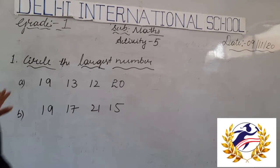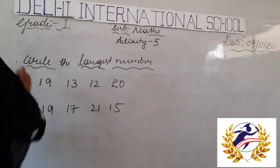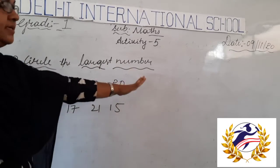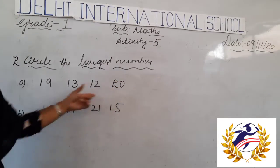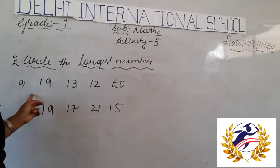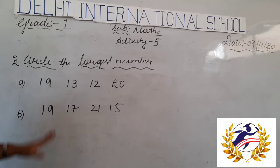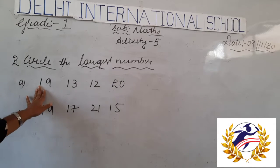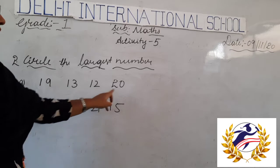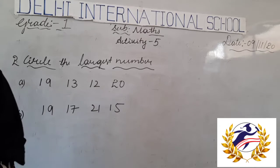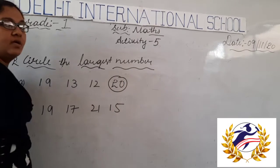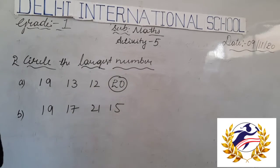Now in the second part, we have to circle the largest number. We have to find out the largest digit and circle it. The given numbers are 19, 13, 12, and 20. Which one is the bigger number here? That is 20. So we have to circle the number 20.